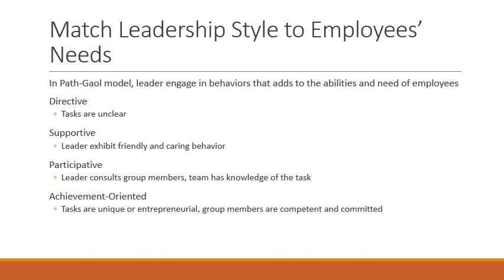Directive leadership tells subordinates exactly what they are supposed to do. Leader behavior includes planning, making schedules, setting performance standards, and stressing adherence to rules and regulations.